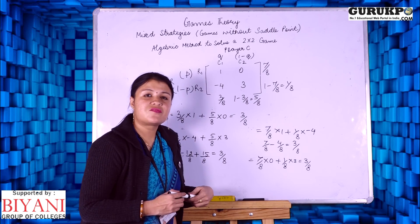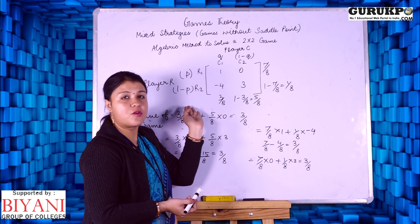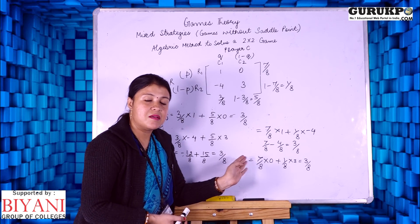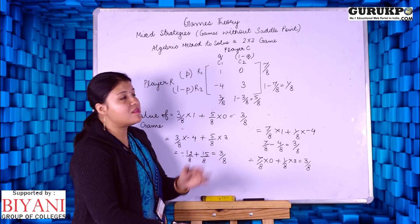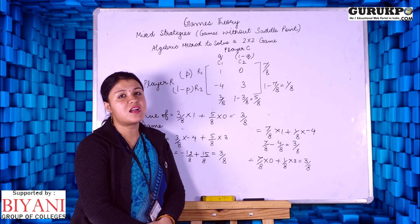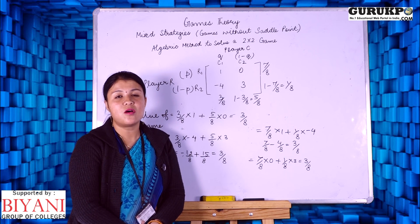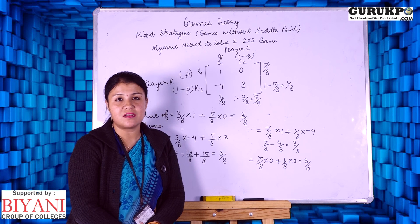Irrespective of the strategy we are following, whether for row player or column player, the value of game comes the same. This is the algebraic method to solve a game which has no saddle point. For more informational videos, please like, comment and subscribe our YouTube channel. Thank you.